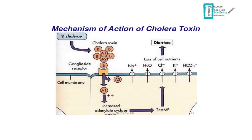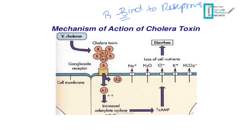The bacteria enters the small intestine, finds its place, and uses its pili to attach to cells. Once in place, it releases cholera toxin. The five B subunits bind to receptors on the cell surface, allowing the A subunits to enter the cell. Inside, the A subunits dissociate, and the A1 subunit increases adenylyl cyclase, which raises cyclic AMP within the cell.